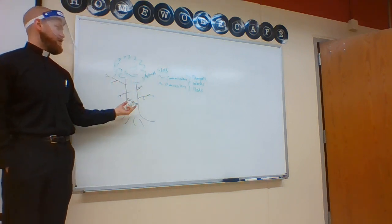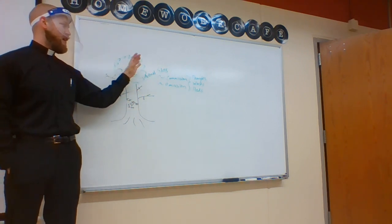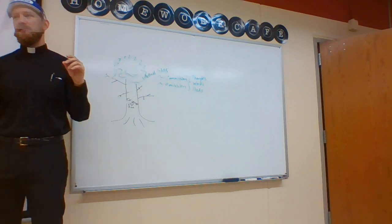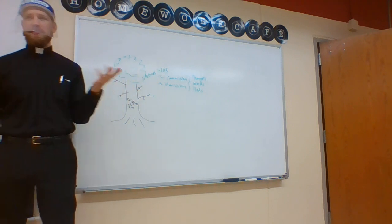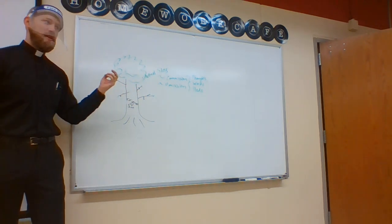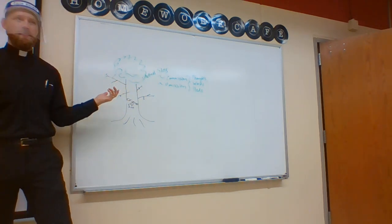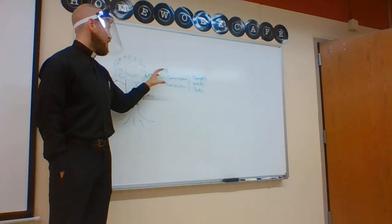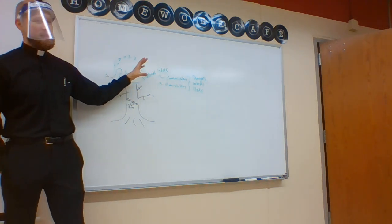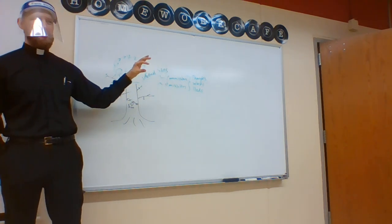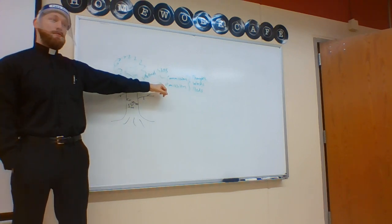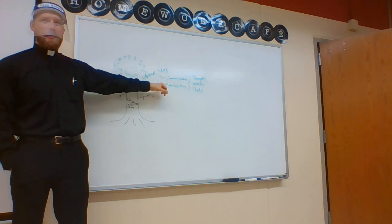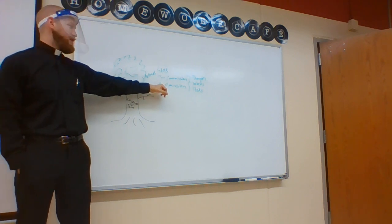So original sin is our condition, and what that produces are actual sins. So a sick tree can only produce sick fruit. A good tree produces good fruit. Which are we? We are a sick tree, producing wicked fruit. Those sins we usually divide up into sins of commission and sins of omission, bad things that we're not supposed to do that we go and do, good things we should do and we refuse to do when we have the opportunity.